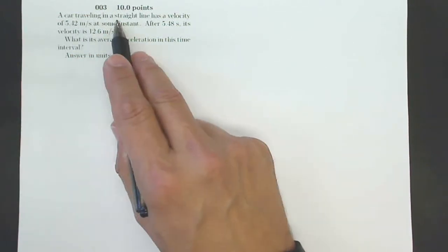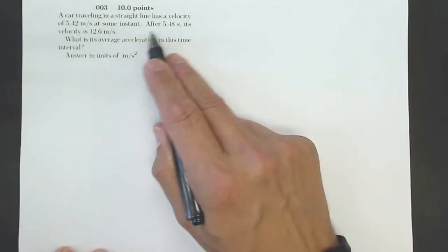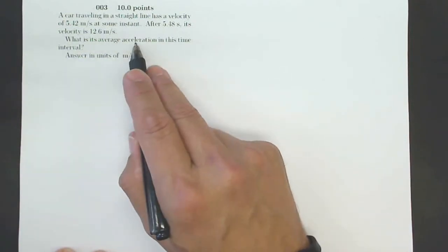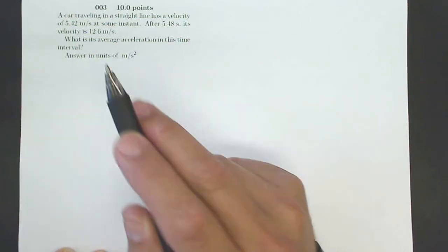It says, a car traveling in a straight line has a velocity of 5.42 meters per second at some instant. After 5.48 seconds, its velocity is 12.6 meters per second. What is its average acceleration in this time interval, answering units of meters per second squared?